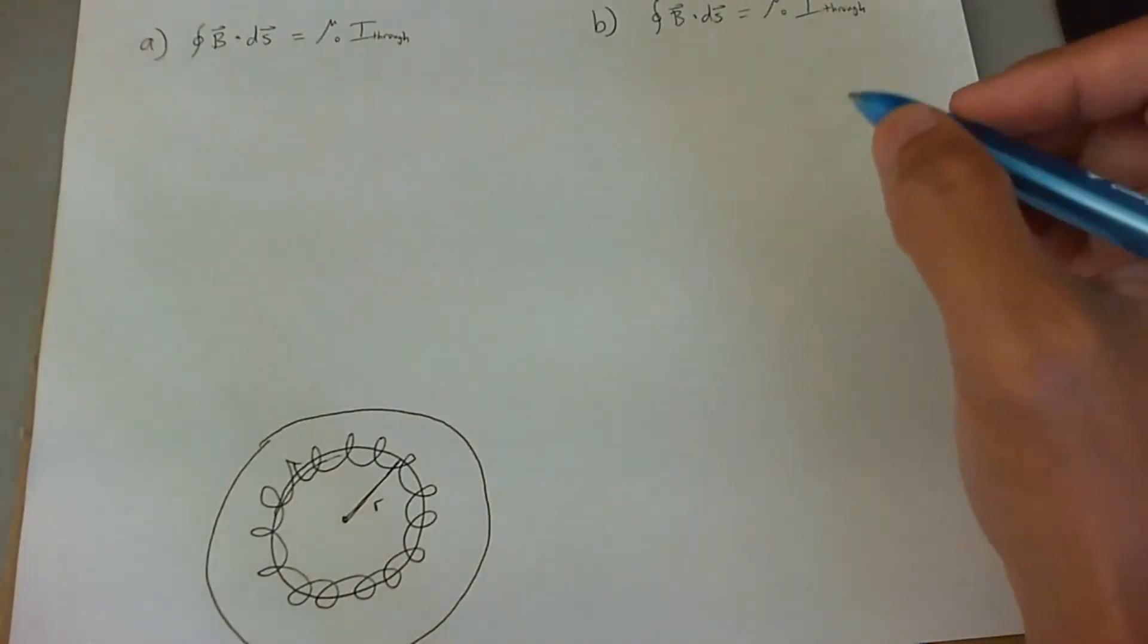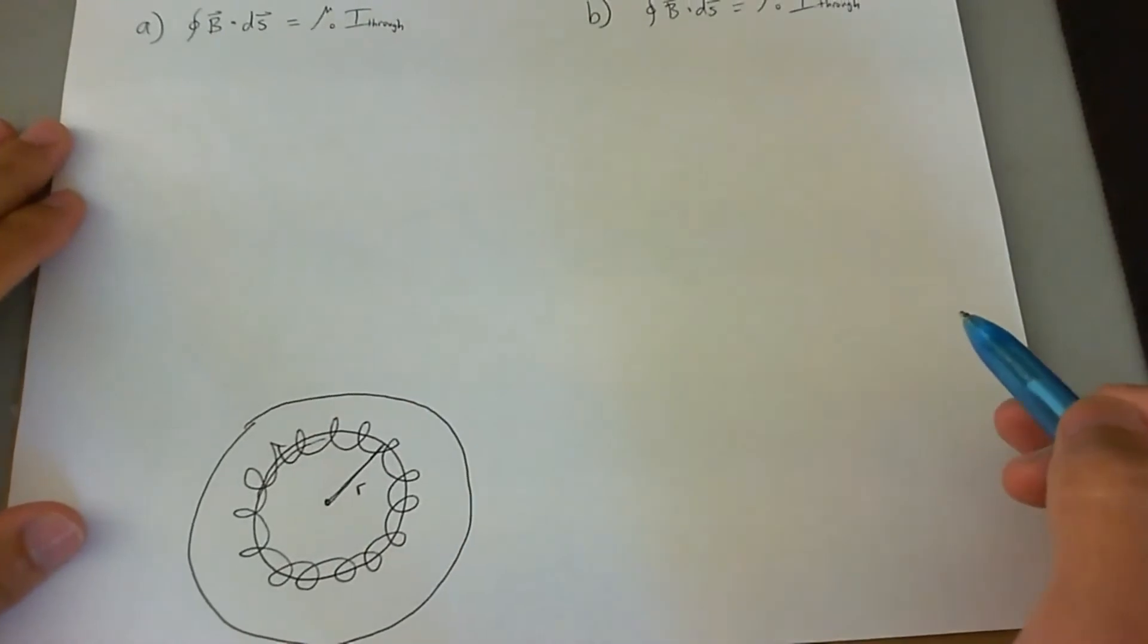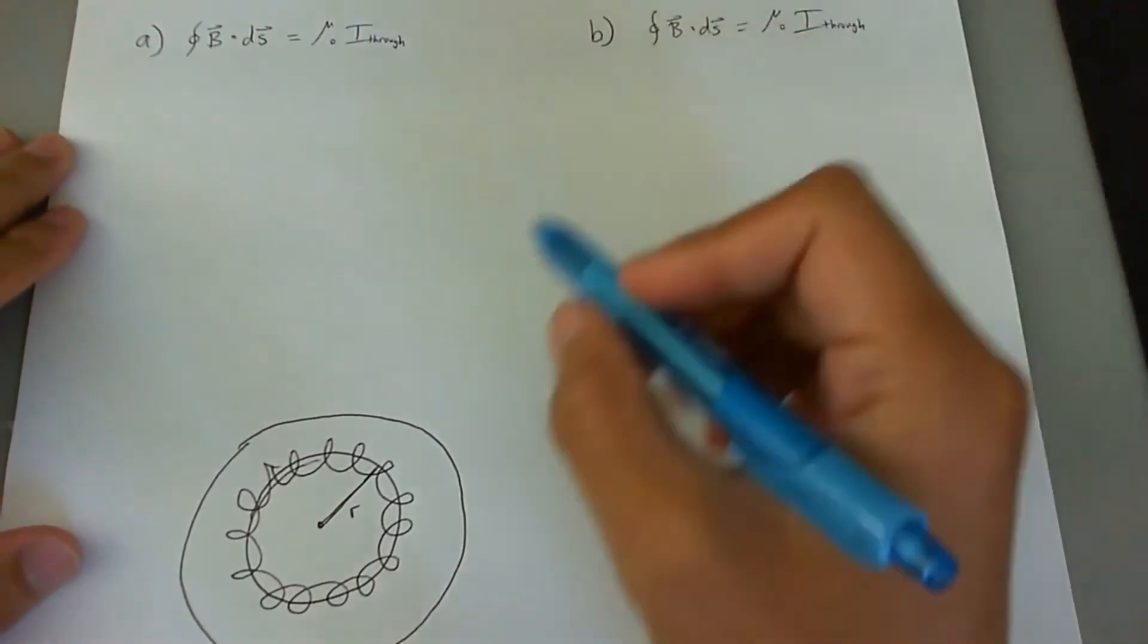In this problem, we want to find the B field inside a toroid and outside of the toroid. And when they say outside of the toroid for part B...